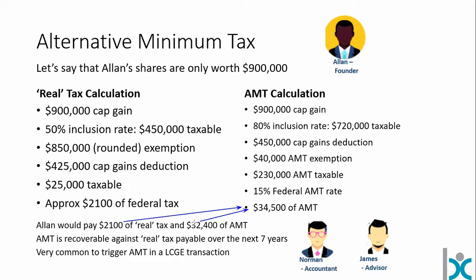AMT is triggered very commonly in farming transactions, and it's not always the case that the client is aware of it. James and Norman need to work together to ensure Alan can recover that AMT over the coming years — whether through RRSP withdrawals or other taxable income strategies. This is definitely something James and the accountant should be flagging.